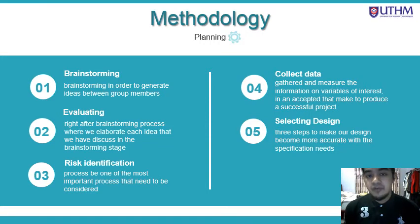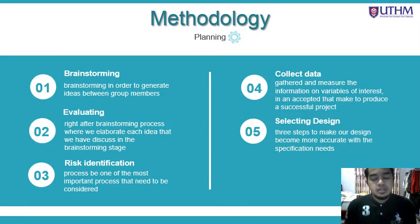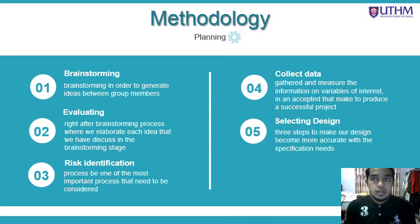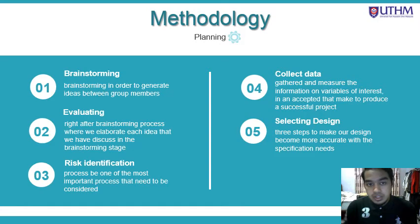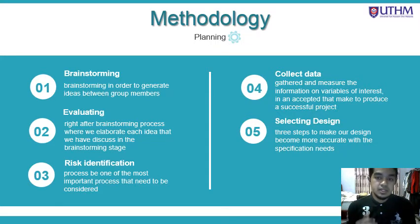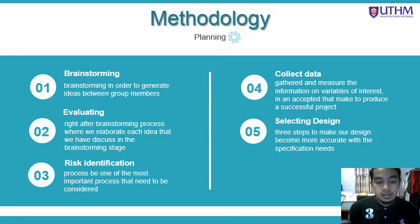We have five steps in the planning phase. Number one is brainstorming, to generate ideas between group members, where each member needs to give two or more ideas in the discussion. Number two is to evaluate the ideas right after brainstorming, elaborating each idea discussed. Number three is risk identification, where during the evaluation process we also discuss risks — what will happen if we take each approach — as this is one of the most important processes to consider.